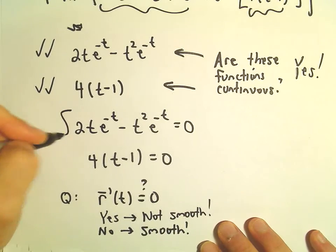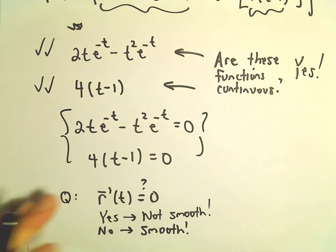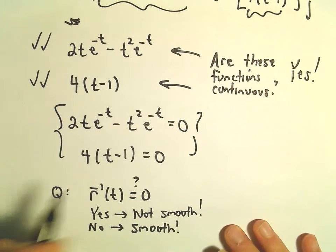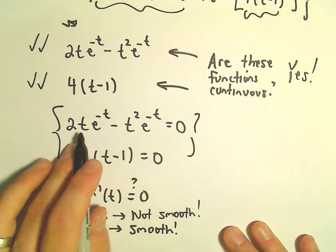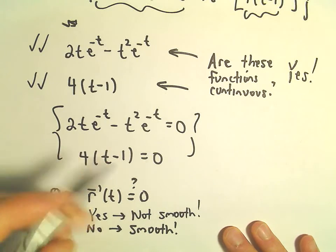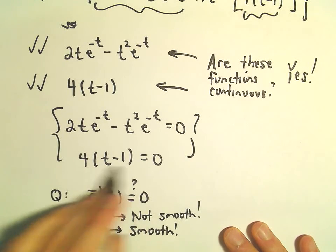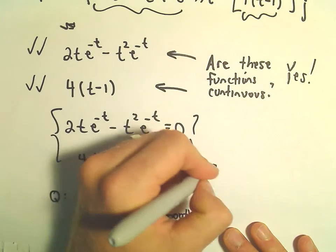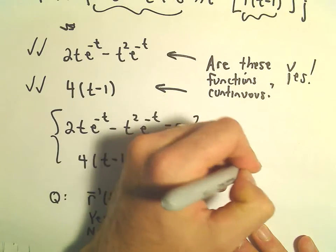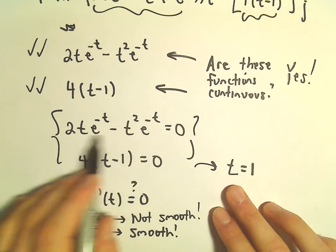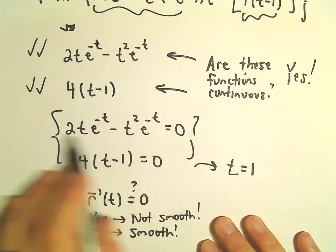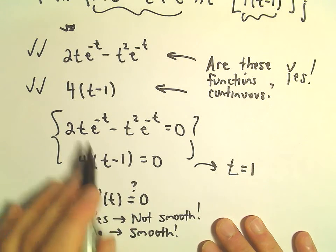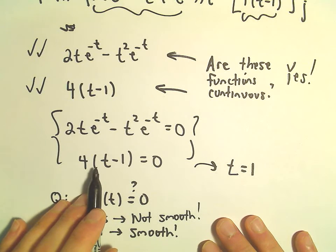So we're just trying to solve this little system. It has to be solved simultaneously. You could factor out a t and pull out an e to the negative t. Certainly it's easier to solve the second one. We pretty much already have our solution. So for the second part, we know that t equals 1 would be a solution. But does that make the first equation also 0 is the question. Because it has to make both equations equal to 0 simultaneously.